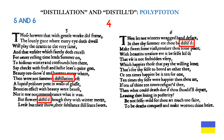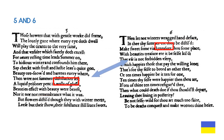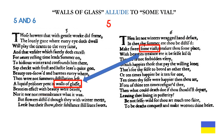Distillation and distilled are another example of polyptoton. Distillation and distilled appear in sonnet five, and distilled appears in sonnet six. Finally, walls of glass in sonnet five allude to some vial in sonnet six.